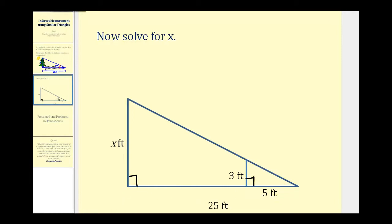So let's go ahead and set up our proportion. X to three must equal twenty-five to five. So to solve for x we'll cross multiply. Five times x or five x must equal three times twenty-five which is seventy-five. Divide both sides by five. And seventy-five divided by five is equal to fifteen. So x equals fifteen which gives us the height of this tree without ever having to leave the ground.